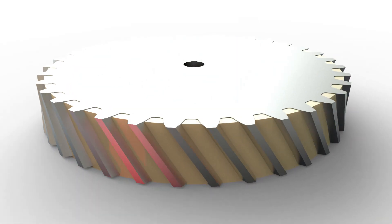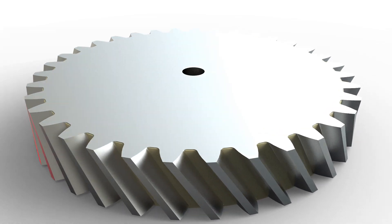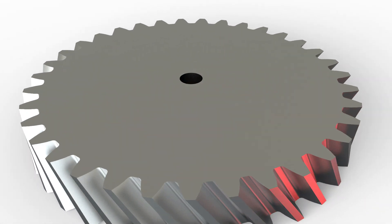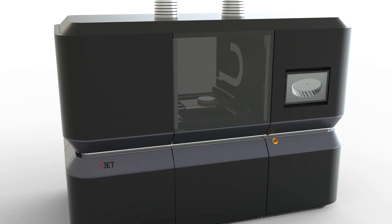After printing, the support component, which is made of a different material, is easily disintegrated and removed. To finalize the process, the printed parts go through sintering.